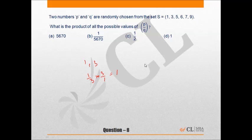Similarly, any pair of values of P and Q that I choose from the set S, my eventual values of P/Q would be P/Q and Q/P, and the product would be equal to 1.